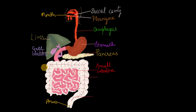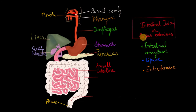The small intestine is a coiled long tube-like structure with three parts: the initial C-shaped part known as the duodenum, then jejunum, and then ileum. It is the highly coiled part of the alimentary canal with two functions: digestion and absorption of food. It produces intestinal juice, also known as succus entericus, which contains intestinal amylase (digestion of carbohydrates), lipases (digestion of fats), and enterokinase (which activates trypsinogen into trypsin).